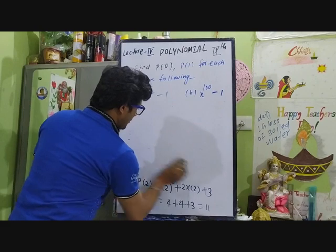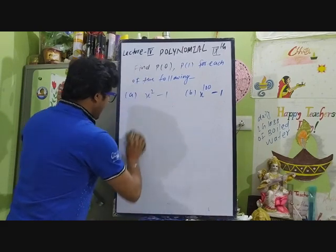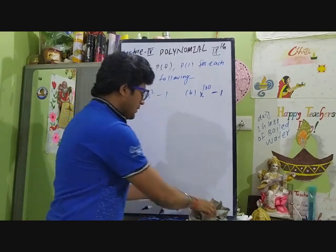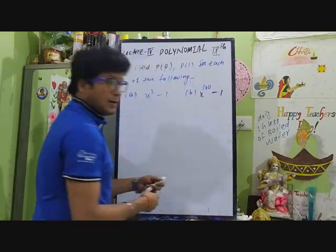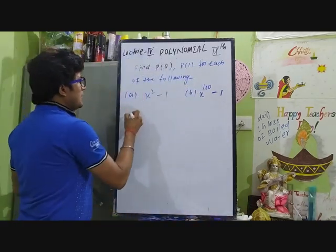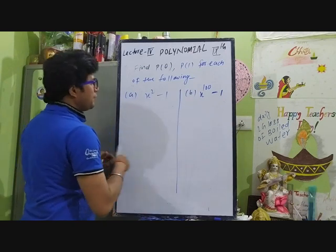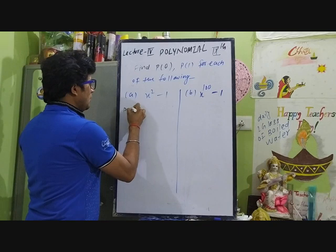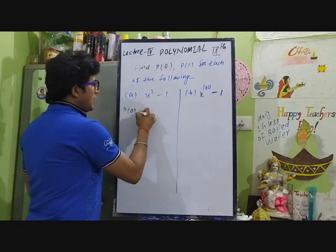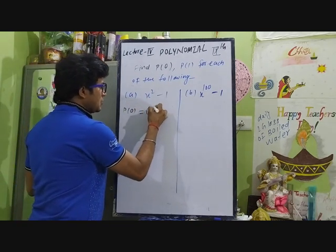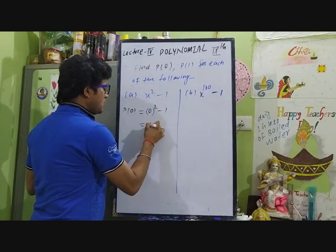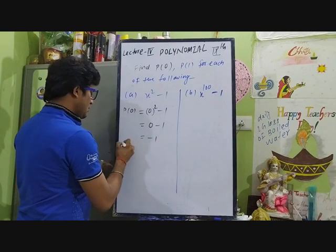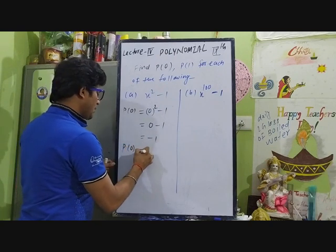For x² - 1, let's find p(0). p(0) means x = 0, so 0² - 1 = 0 - 1 = -1. Therefore, p(0) = -1.